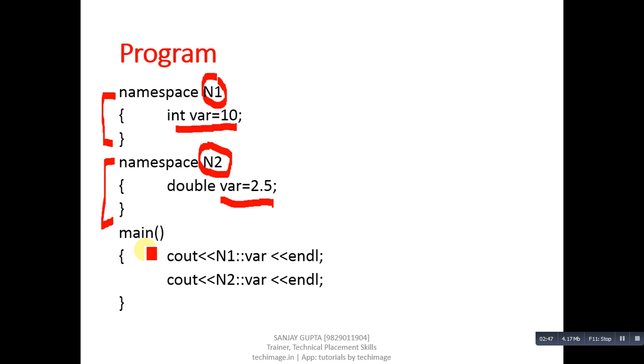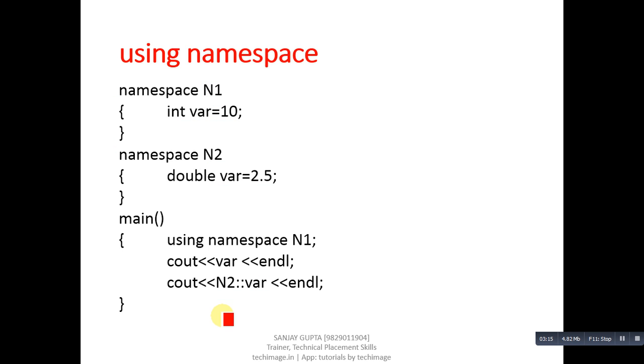Inside the main function, we have to access these variables using the scope resolution operator. Names are the same, so you have to use a particular namespace name, then scope resolution, and then variable name. Similar to N2: N2 namespace name, scope resolution, and then variable name. If you have multiple or more than one variable in a namespace, then every time you have to use the name of that namespace.